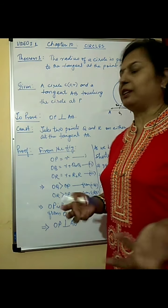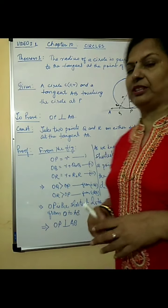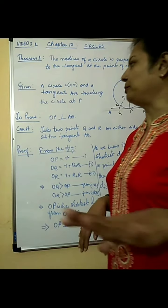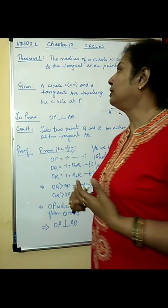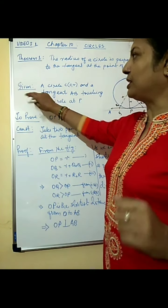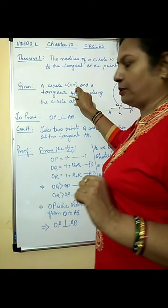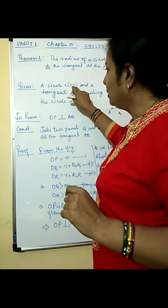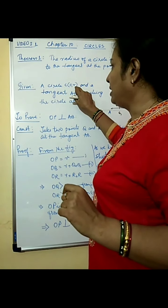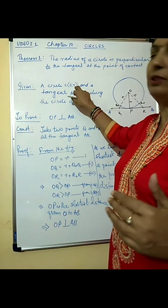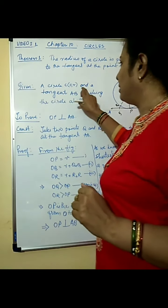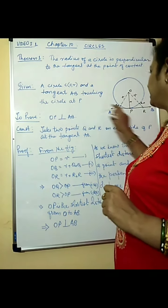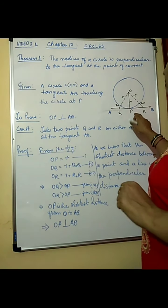Whenever we prove a theorem, we start with given, then to prove, then construction, figure, and proof — these are the five major parts. Given: a circle C(O, R), where C means circle, O is the centre, and R is the radius. We are also given a tangent AB touching the circle at point P, so P is the point of contact. To prove: OP is perpendicular to AB.